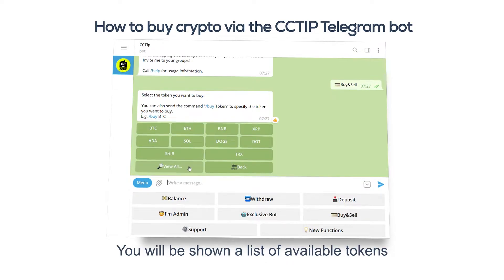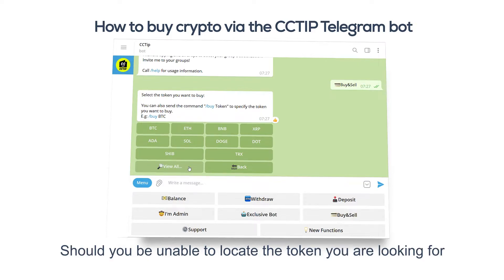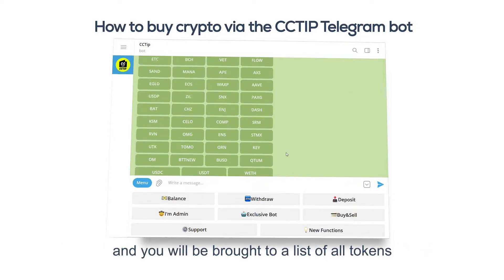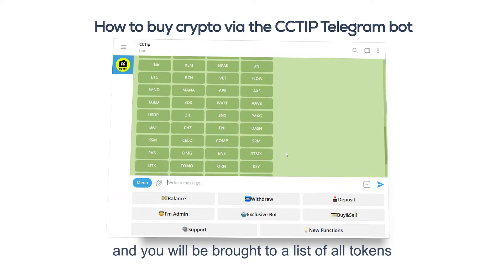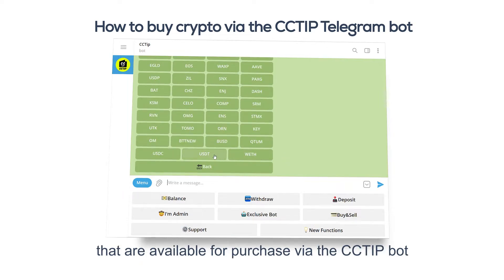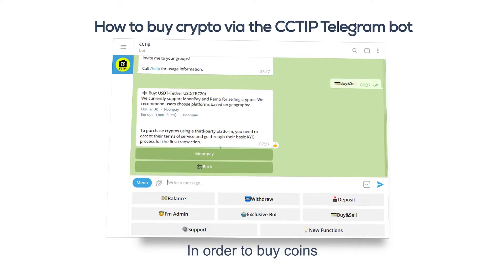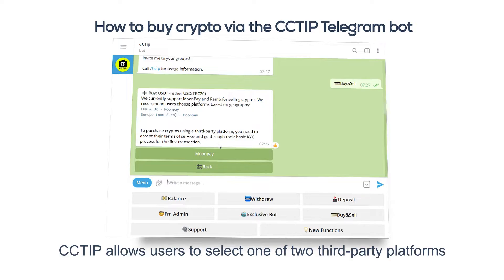You will be shown a list of available tokens. Should you be unable to locate the token you are looking for, click the button 'View All' and you will be brought to a list of all tokens available for purchase via the CCTip bot.